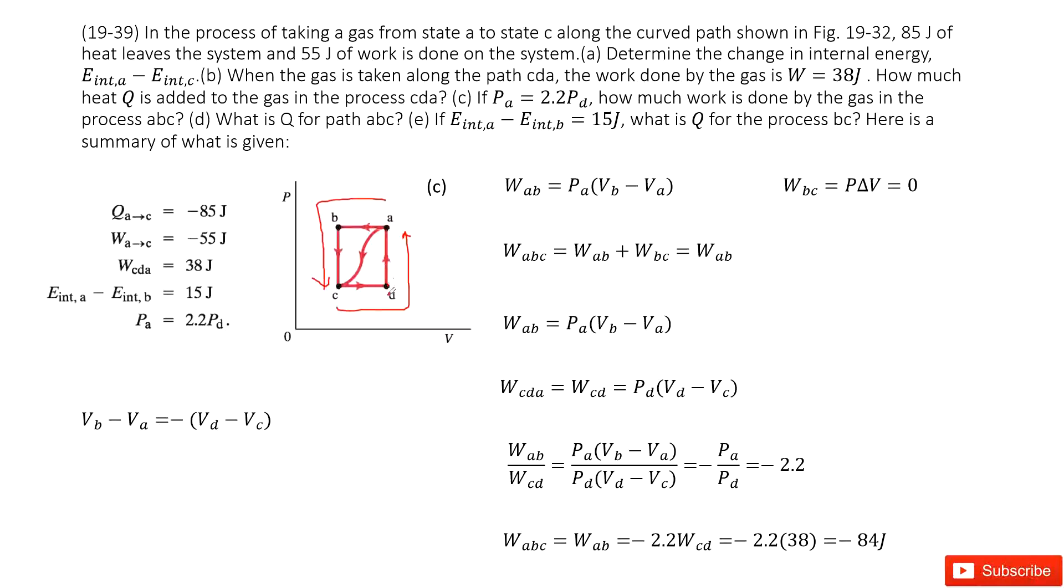Now we can see, can you write the work done by CDA? Yes, we can see the work done by it should include the work done by CD and work done by DA. And then for DA, you can see the volume is constant. So this process DA didn't do any work. So W_DA is zero. So the work, the process that does the work is CD.